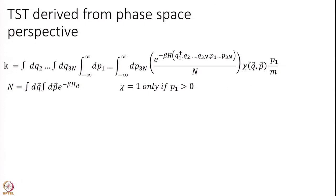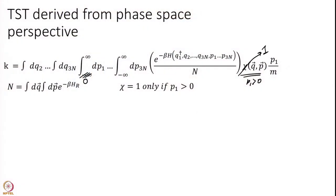We have our formulas for D-tilde and chi, and all that is needed is to put them into the big integral. Chi here will be 1 only if p1 is greater than 0; otherwise it will be 0. So I change the integral over p1 from 0 to infinity, because if p1 is less than 0, chi will equal 0 and will not contribute to the integral. Then I can set chi equal to 1 for the remaining integration where p1 is greater than 0.